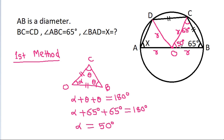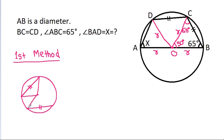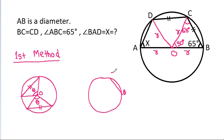This angle at center O from chord BC is 50 degrees. In any circle, if two chords are equal, they make equal angles at the center. Since BC equals CD, chord CD also makes an angle of 50 degrees at center O.